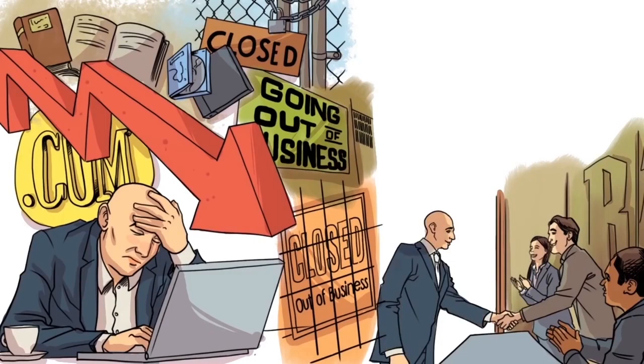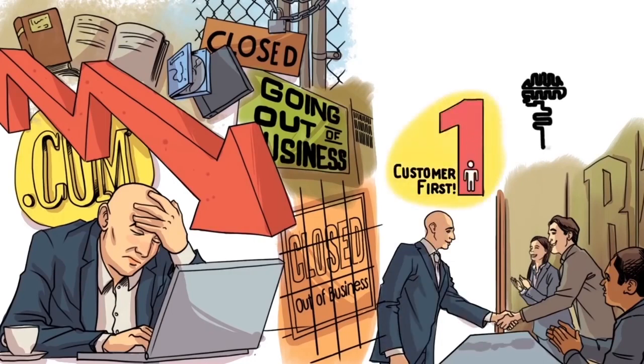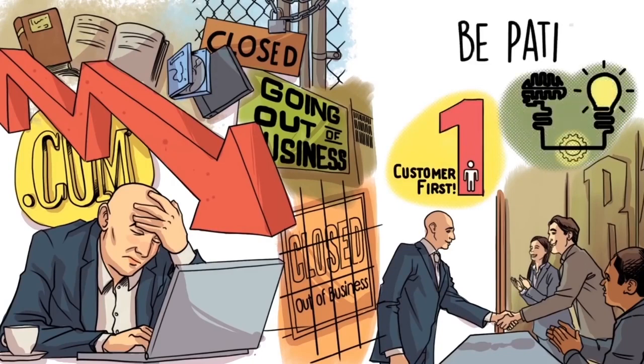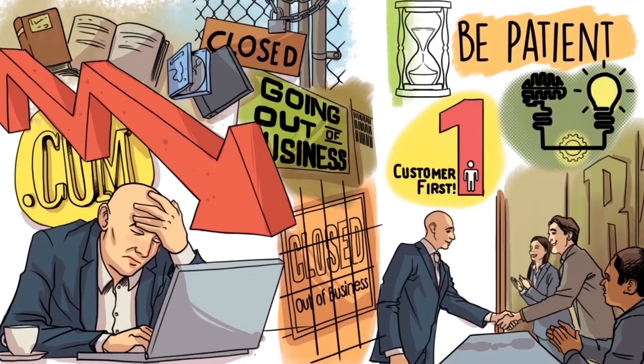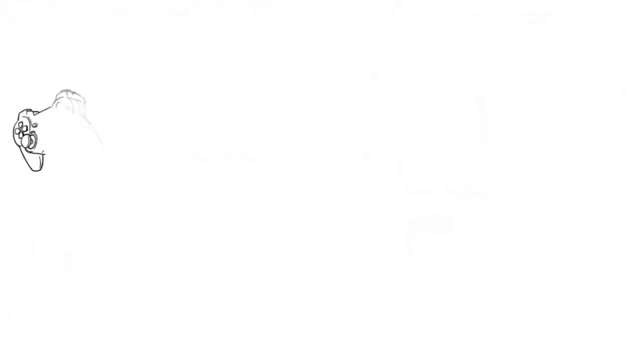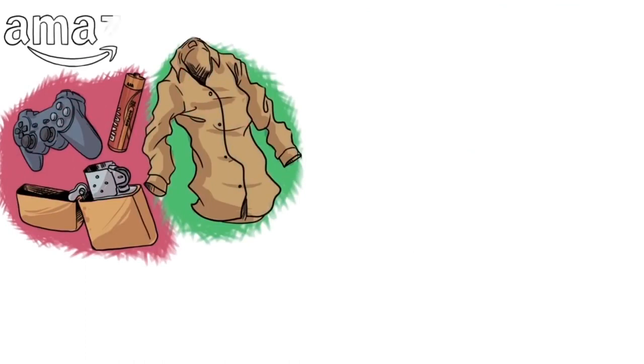During this time we followed our main three principles: one, the customer is first; two, stay innovative and remain inventive; and three, be patient. To us, inventive meant more than just e-commerce. It meant admitting that we weren't perfect and that we would solve our mistakes. We began as a humble online bookstore turned into an online e-commerce store where anyone can find anything from A to Z, as the logo shows.